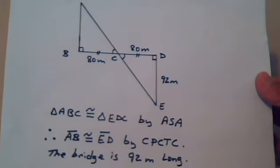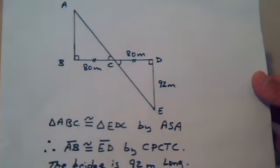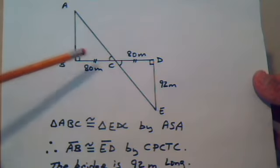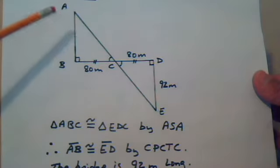Just taking the triangles to simplify, let's see what information we have. Well we know that this is 90 and this is 90, so these pair of angles are equal, they're congruent.